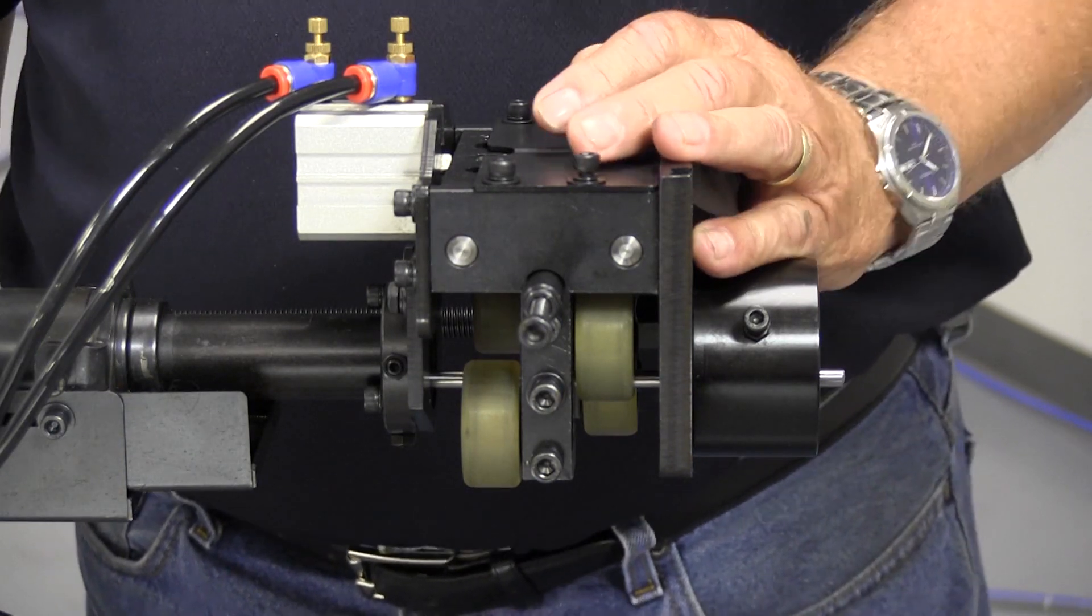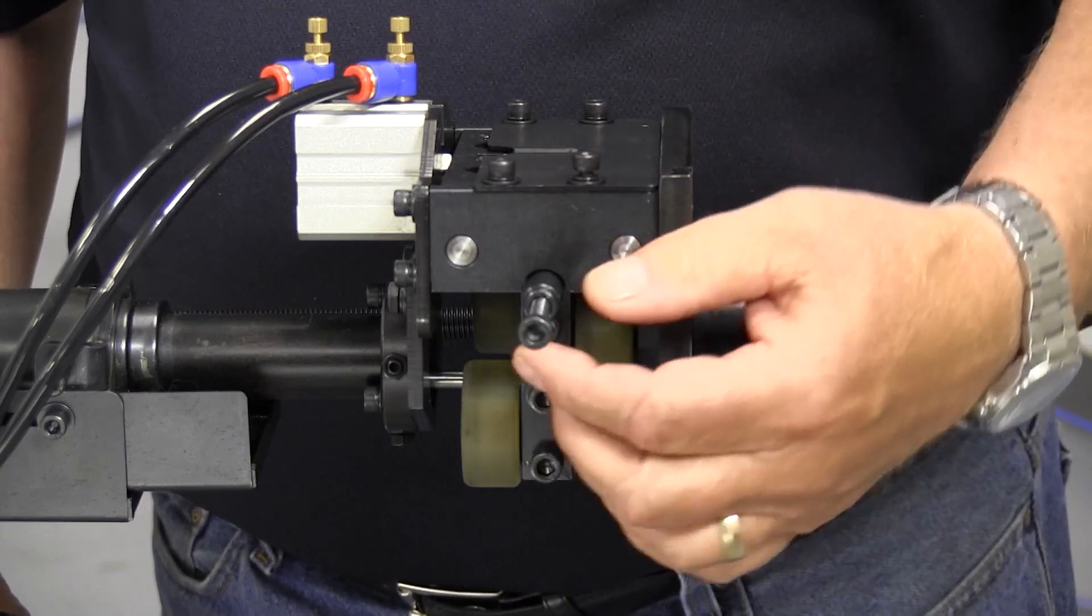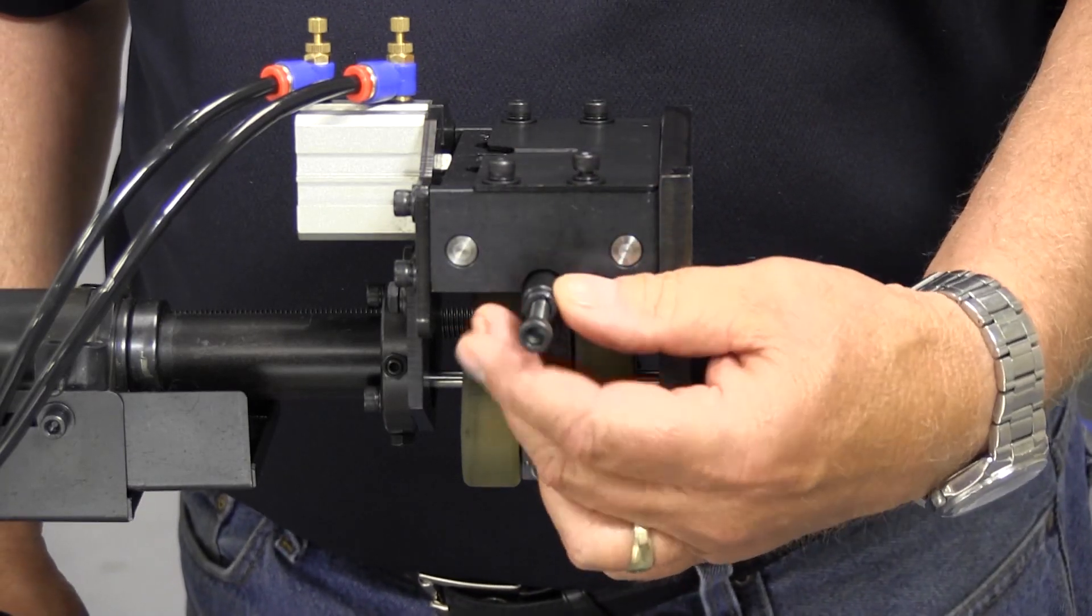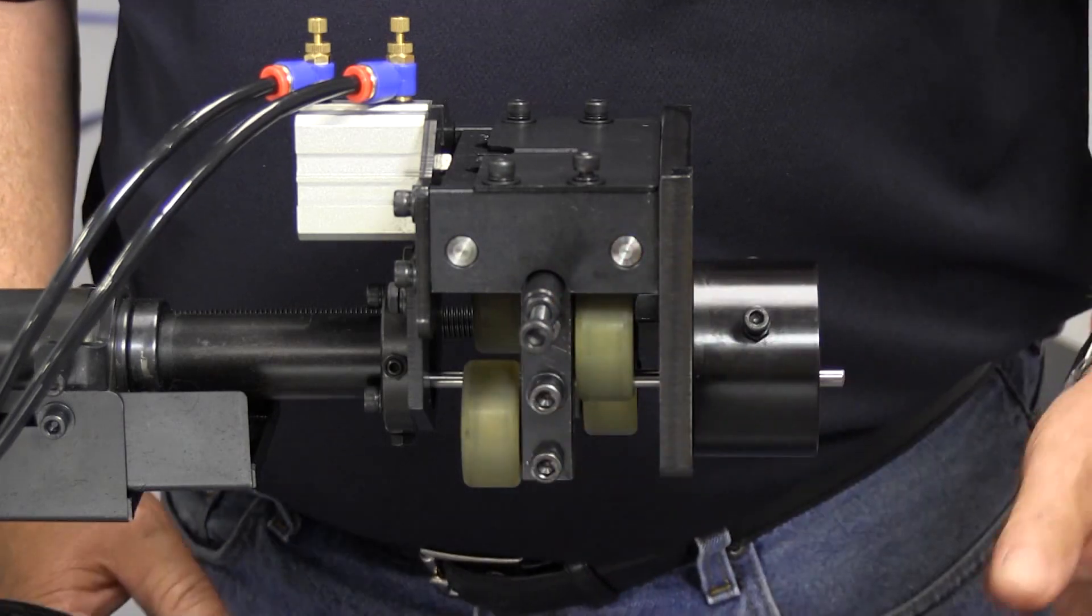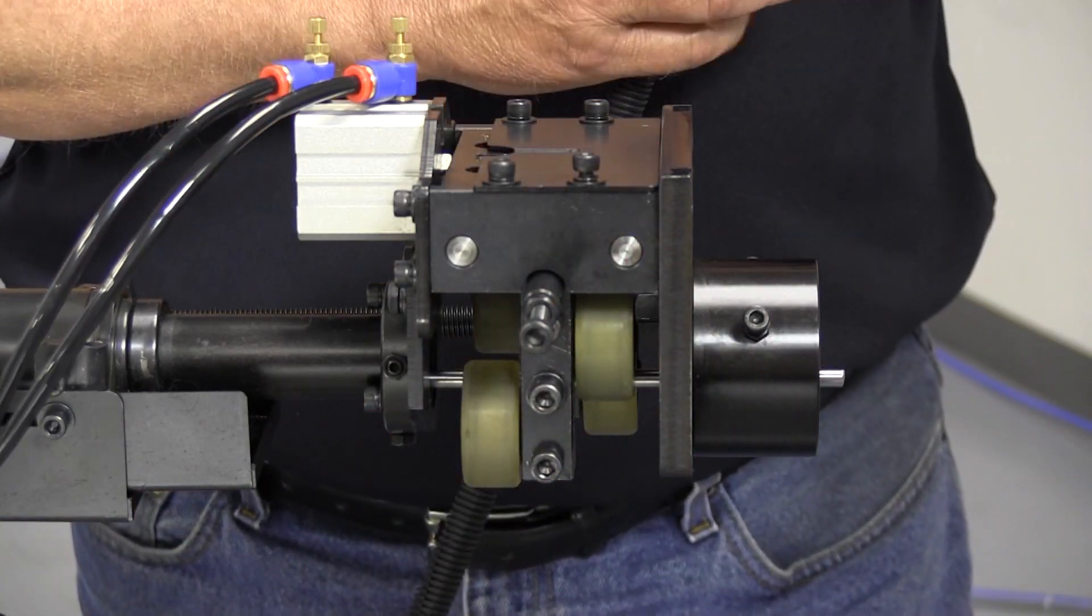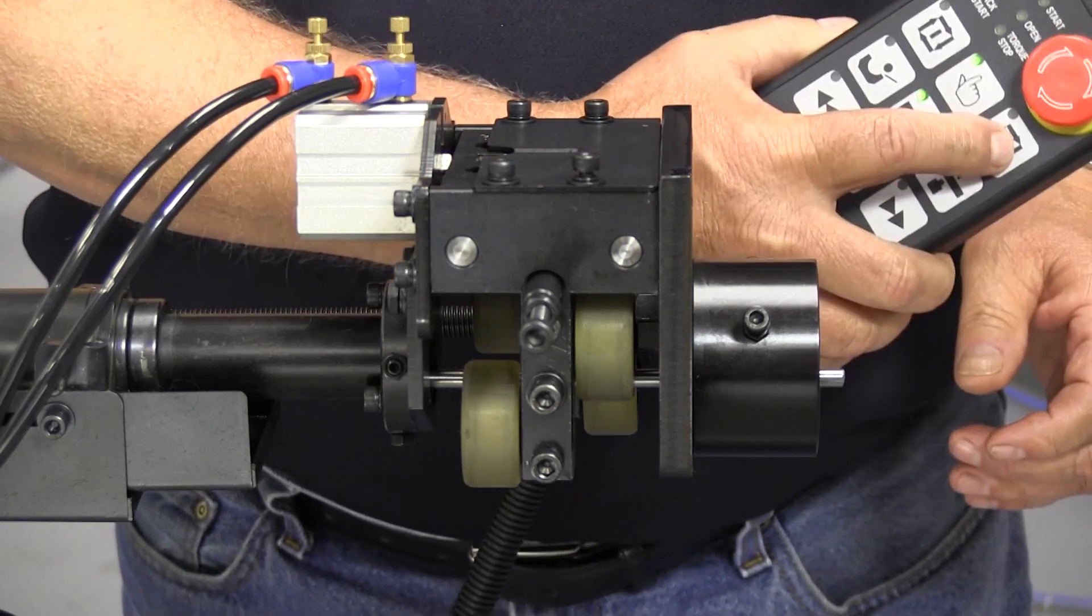To adjust the rollers, you need the main spindle collet closed on the lathe. You have a 10 millimeter nut on your adjusting screw. Make sure it's loose, then come to your handheld controller and push the pre-auto button which will allow them to close.